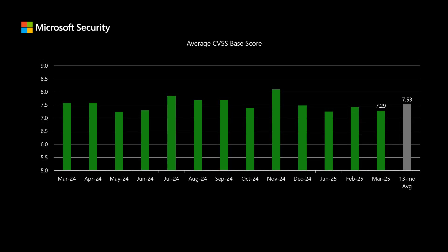Next I'll talk to the average CVSS score across all of the vulnerabilities in today's release. That comes in at 7.29, which is about a quarter point lower than our average over the past 13 months of just over 7.5.